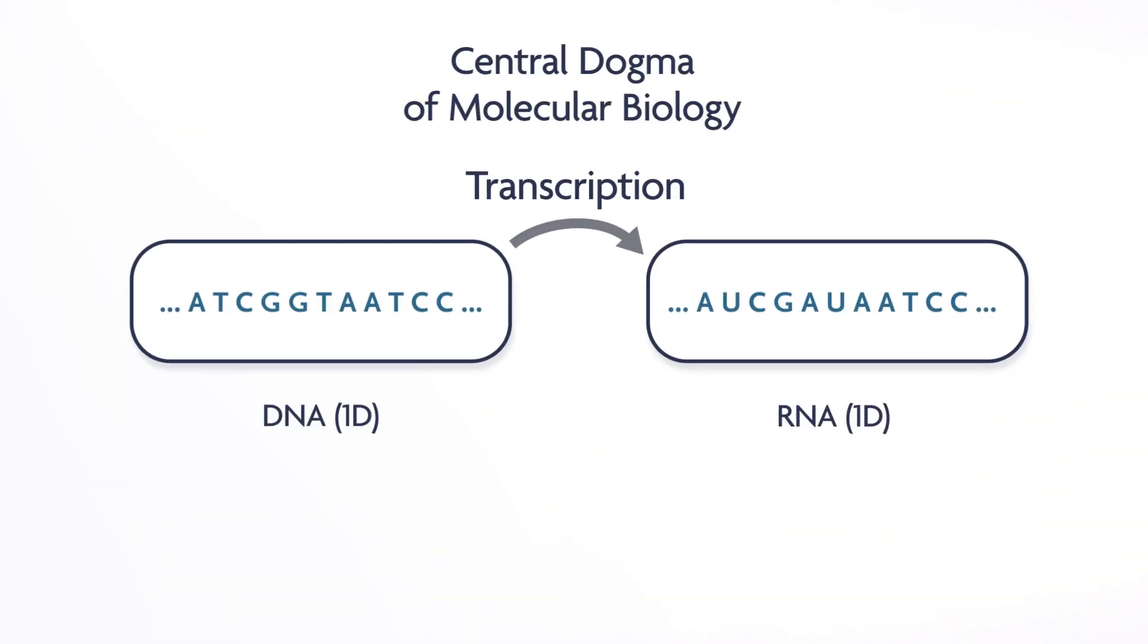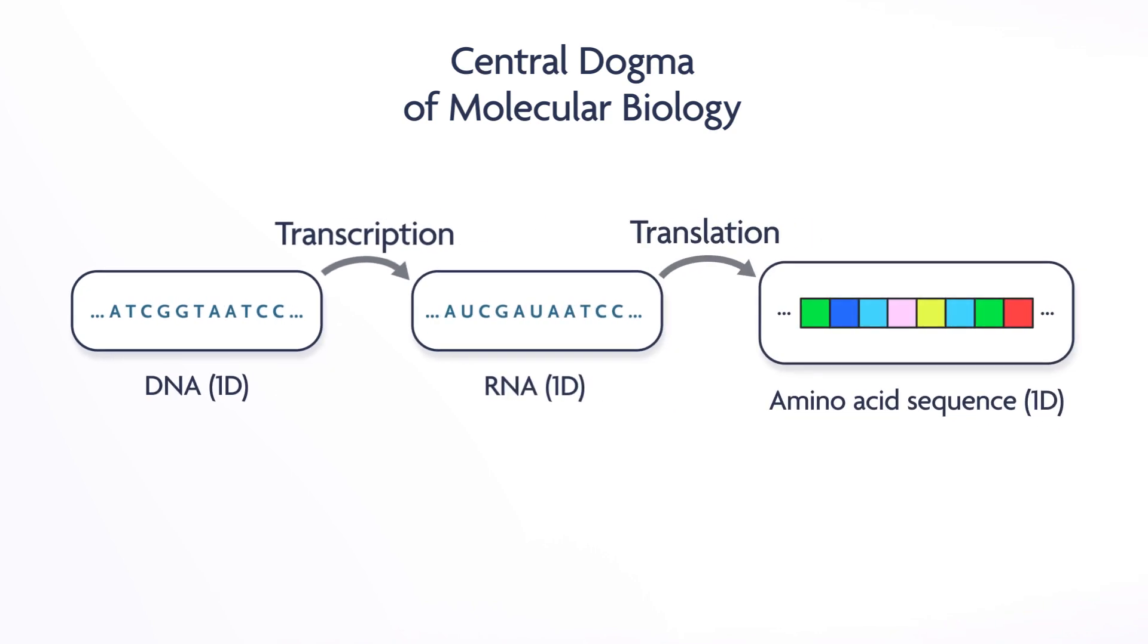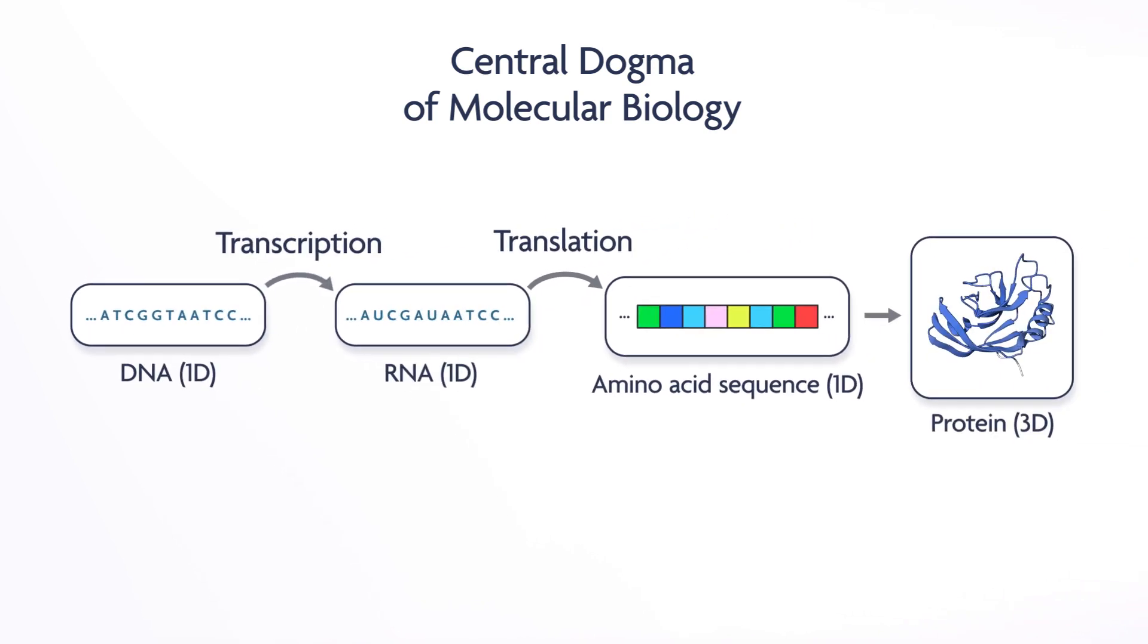From the central dogma, we know that DNA is transcribed into RNA and then translated into an amino acid sequence, which contains all the necessary information to reliably fold into a three-dimensional protein.